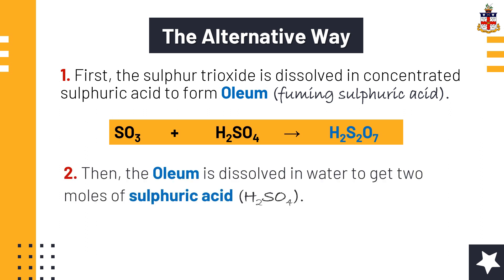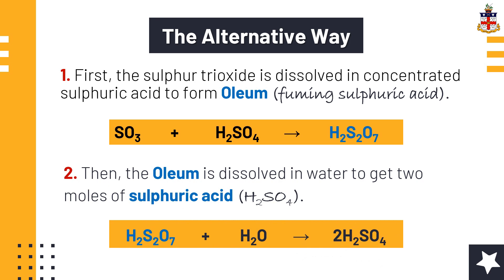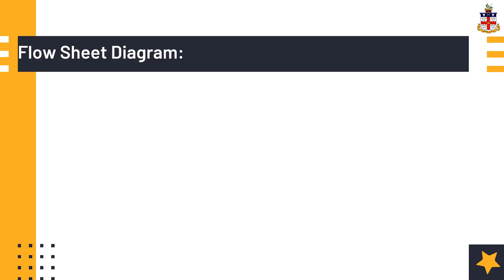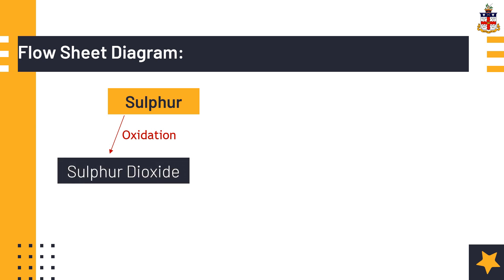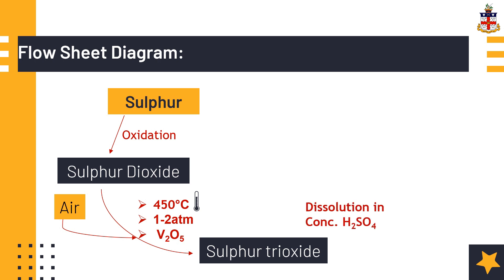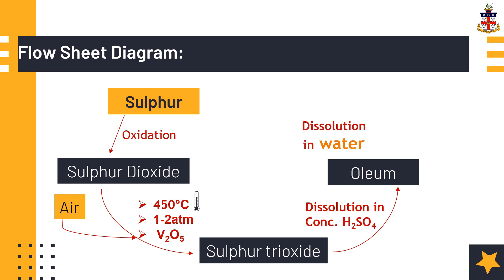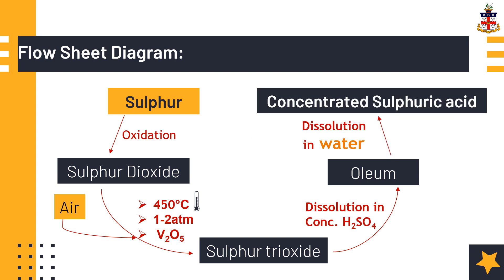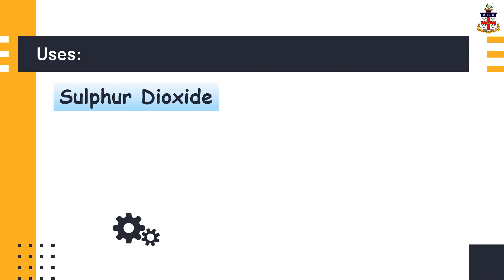Then the oleum is dissolved in water to produce two moles of sulfuric acid, H₂SO₄. The steps involved in the contact process can be summarized with the help of a flow sheet diagram. Sulfur undergoes oxidation to produce sulfur dioxide. Sulfur dioxide is then mixed with air and passed through beds of catalyst at 450 degrees Celsius and one to two atmospheres pressure. The sulfur trioxide thus formed is dissolved in concentrated sulfuric acid to produce oleum, which on dissolution in water results in the production of concentrated sulfuric acid.